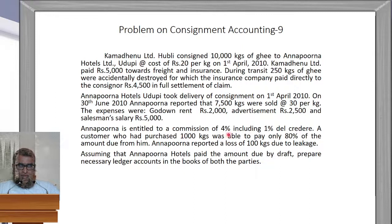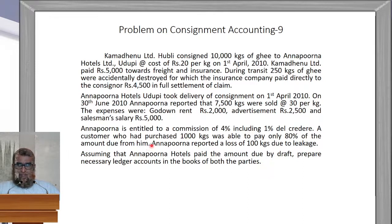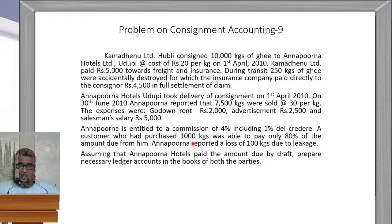Annapurna Hotels is entitled to a commission of 4%, including 1% del credere. So 4% commission = 3% normal commission plus 1% del credere commission. A customer who had purchased 1,000 kgs was able to pay only 80% of the amount due. That means out of 7,500 kgs total sales, 1,000 kgs was a credit sale and 6,500 kgs was a cash sale. The credit sale amount is 1,000 into 30 = Rs. 30,000.